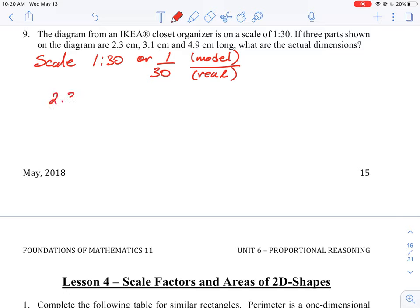This is saying that one of the measurements, for example the 2.3 centimeters, is actually the model. So it's the 2.3 centimeters on the model and we want to know what is the real dimension going to be in terms of the life-size model.